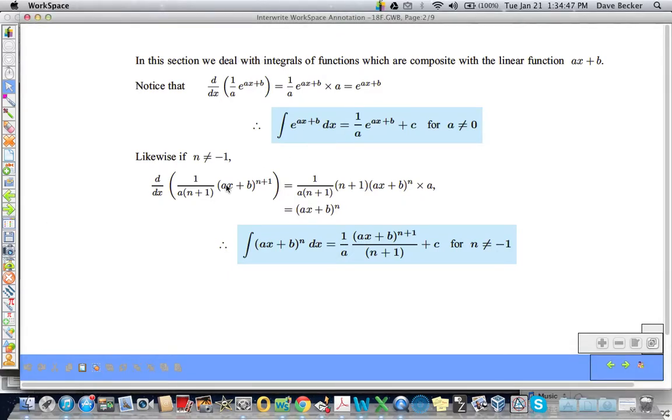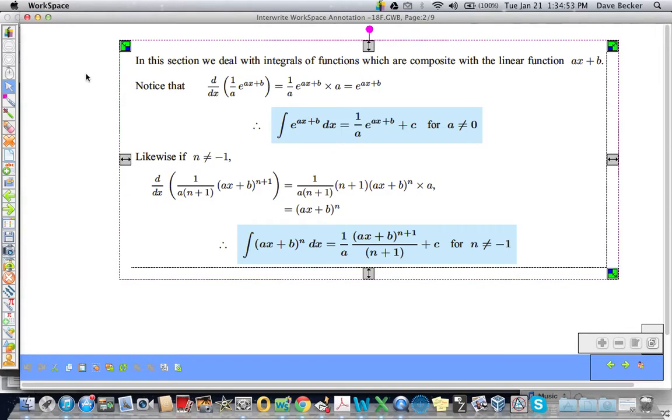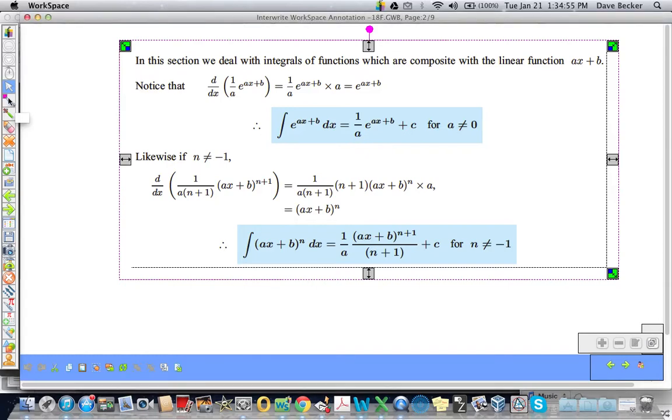Looks like a bunch of gobbledygook, but here's the upshot. If I integrate E to the cat, if I take the integral of E, forget about that, E to the cat, that equals E to the cat plus C, right? Okay, well, let's pretend our cat is AX plus B.